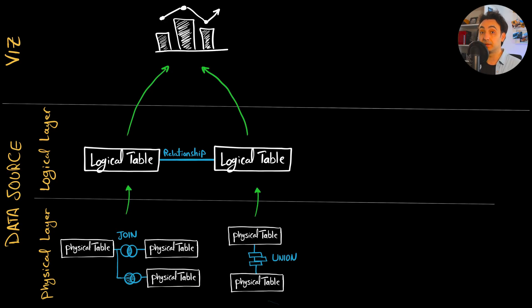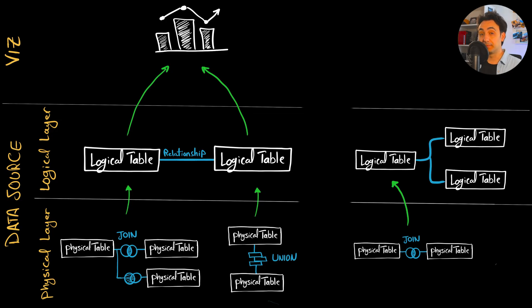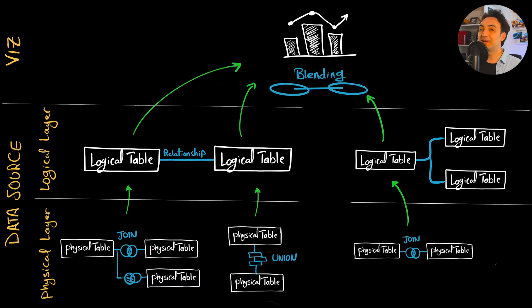Sometimes as you work on projects you build another data source with another data model. It's important to understand that not all logical tables come from physical tables — they could come directly from your source system. In order to build visualizations from both data models and data sources, we need to connect those two data sources at the visualization level, where Tableau offers a unique method called data blending.